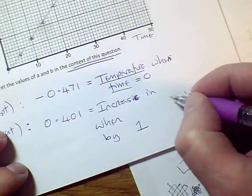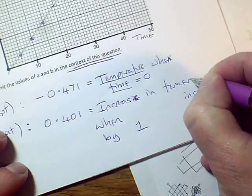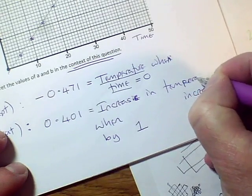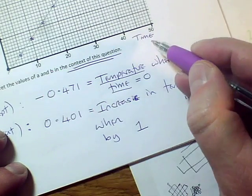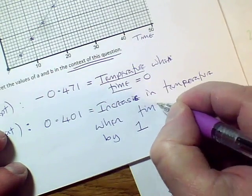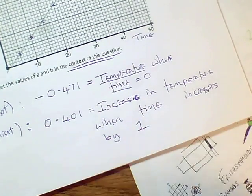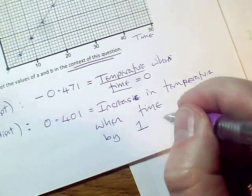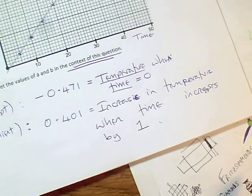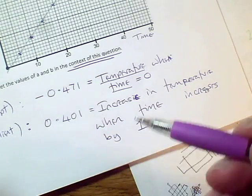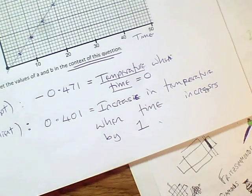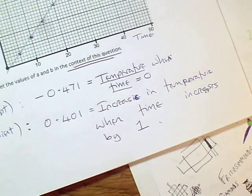It's the increase in whatever's on my y-axis. So in this case, it's the increase in temperature when whatever goes along here, that's time, when time increases by one. So in other words, it's how much hotter it gets every minute. But you can write that sentence and it's valid interpretation in context. So learn these as templates where you just slot in the names of the variables into standard statements. And that will at least get you something that makes some kind of sense. And you can write it more nicely afterwards. That's lovely if you do.